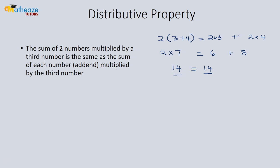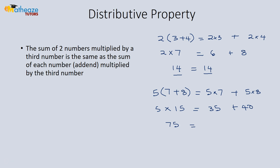Let's try another example: 5 times (7+8). This is the same as (5×7) plus (5×8). So 5 times 15 is 75, and 35 plus 40 is also 75.